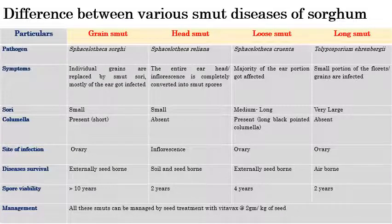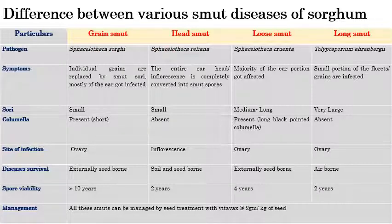Now we will see the differences between various smut diseases of sorghum. In sorghum, we can see mainly four types of smut diseases: grain smut, head smut, loose smut, and long smut. Grain smut is caused by Sporisorium sorghi; head smut by Sporisorium reilianum; loose smut by Sporisorium cruentum; and long smut by Tolyposporium ehrenbergii.